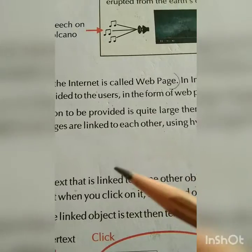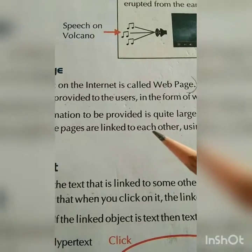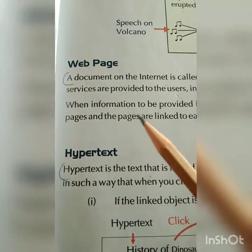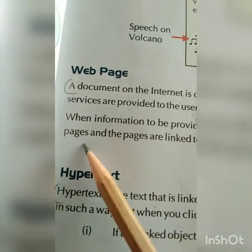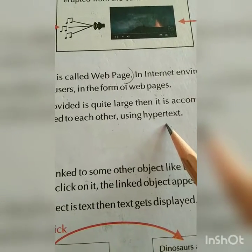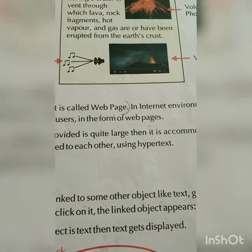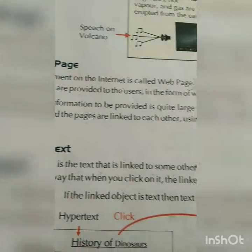In short, everything you can add and change with the help of the internet, and that is known as an HTML document. When information is quite large it is accommodated in multiple web pages. The pages are linked to each other using hypertext — you can join so many pages together. For example, one document you did about a volcano and another one is about a wild tiger. You connect each page with each other with the help of hypertext.